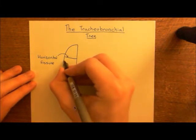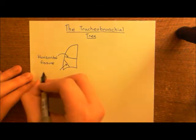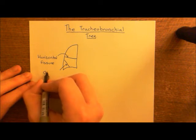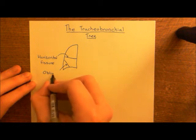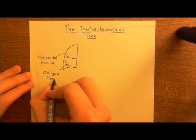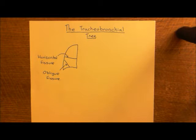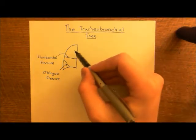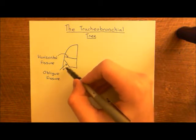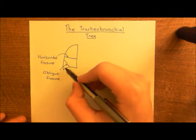Then there is another big fissure down here, which is known as the oblique fissure. Oblique kind of means diagonal, so you can see why this would be called the diagonal fissure - oblique is the old word for diagonal. These two huge fissures, which you can easily stick your hands into, separate the right lung into three clear lobes: an upper lobe, a middle lobe, and a lower lobe.